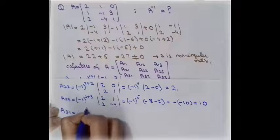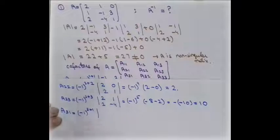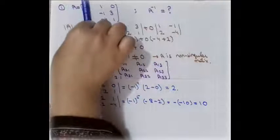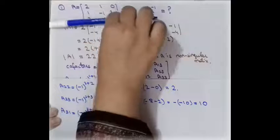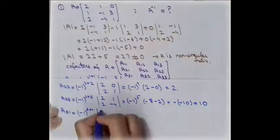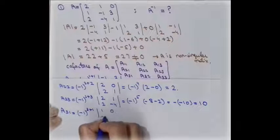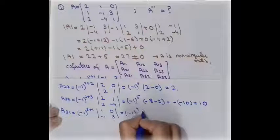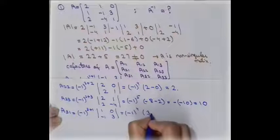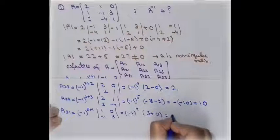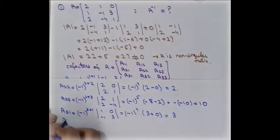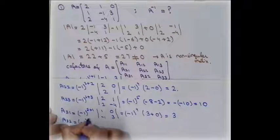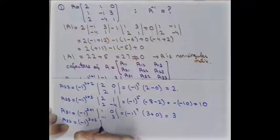For A31, with i+j = 3+1 = 4, we remove this row and column, leaving elements 1, 0, 1, 3. Computing: (-1)^4 × (3 + 0) = 1 × 3 = 3. So A31 = 3.